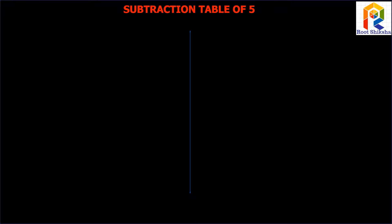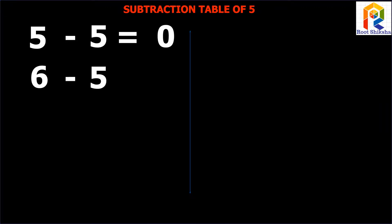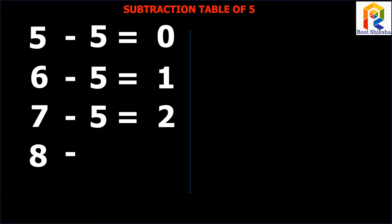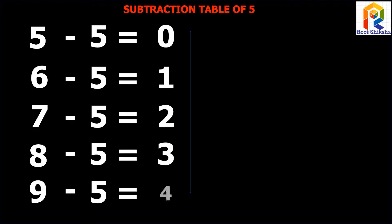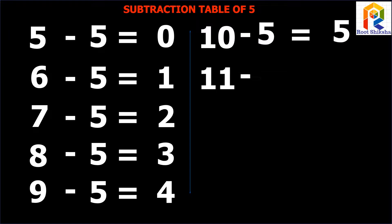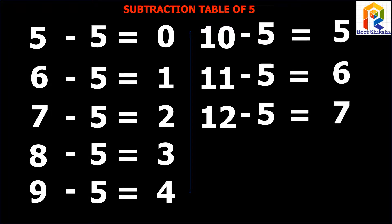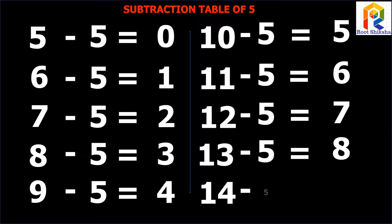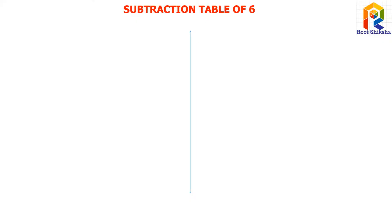Subtraction Table 5. 5 minus 5 equals to 0. 6 minus 5 equals to 1. 7 minus 5 equals to 2. 8 minus 5 equals to 3. 9 minus 5 equals to 4. 10 minus 5 equals to 5. 11 minus 5 equals to 6. 12 minus 5 equals to 7. 13 minus 5 equals to 8. Subtraction Table 6.